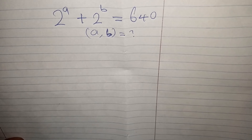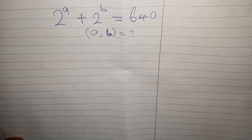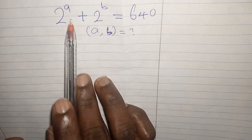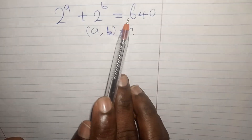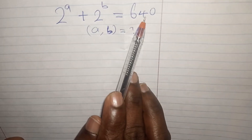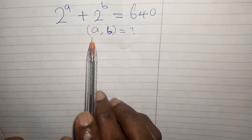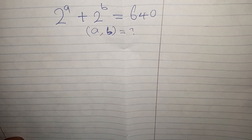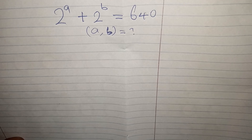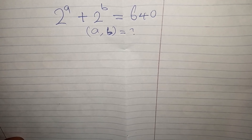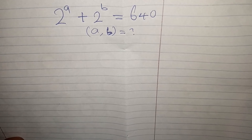Hello guys, welcome again to my channel. Today's video we want to solve another math problem which reads: 2 to the power of a plus 2 to the power of b equals 640, and we are looking for the possible values of a and b. Please if you are new here, kindly subscribe and turn on the notification button so you get notified anytime I drop videos on math.